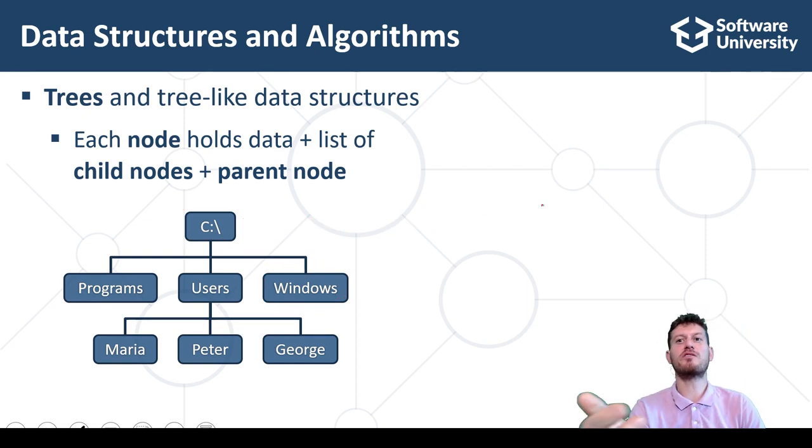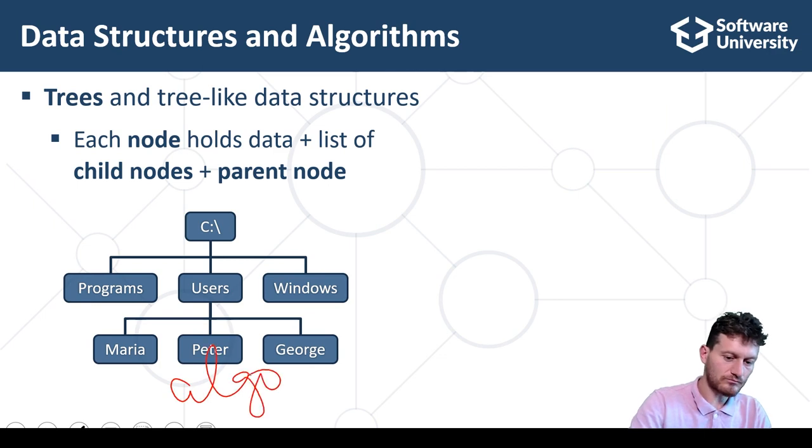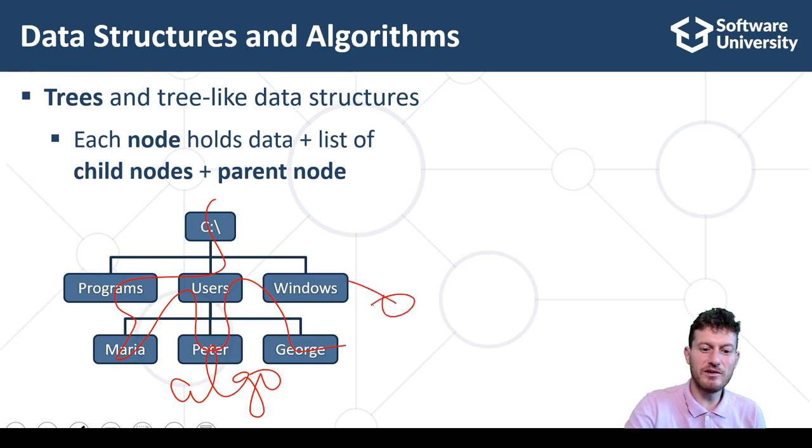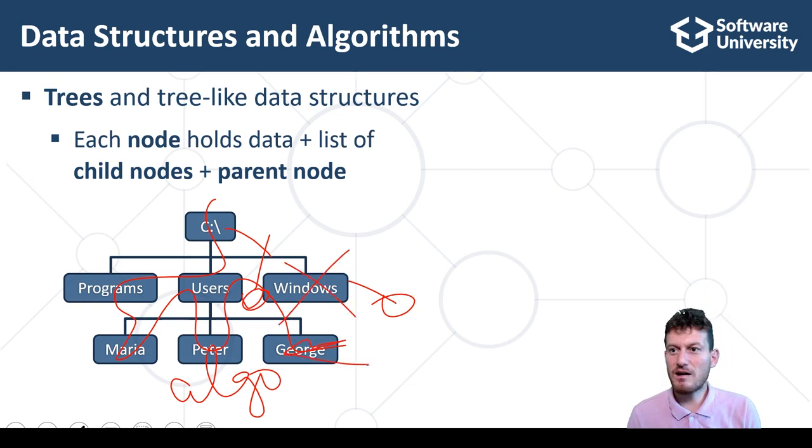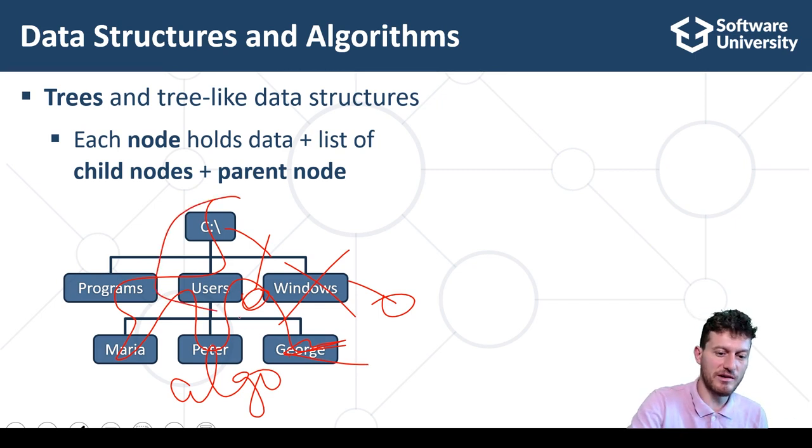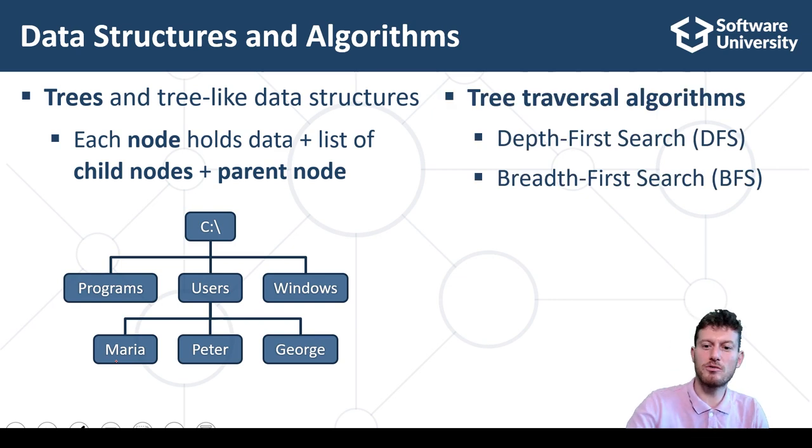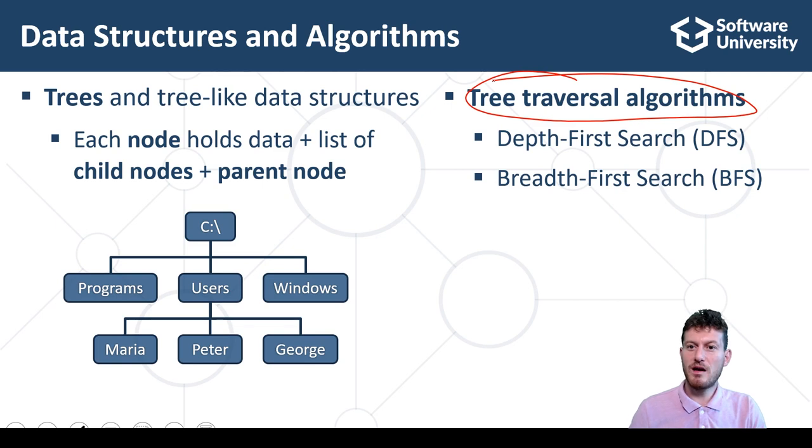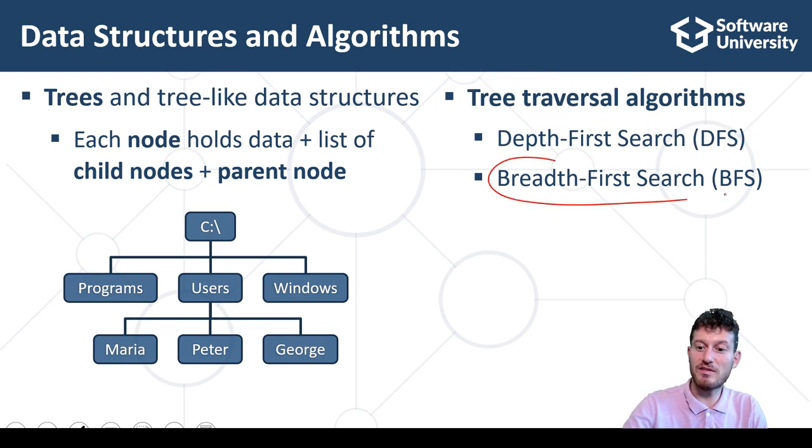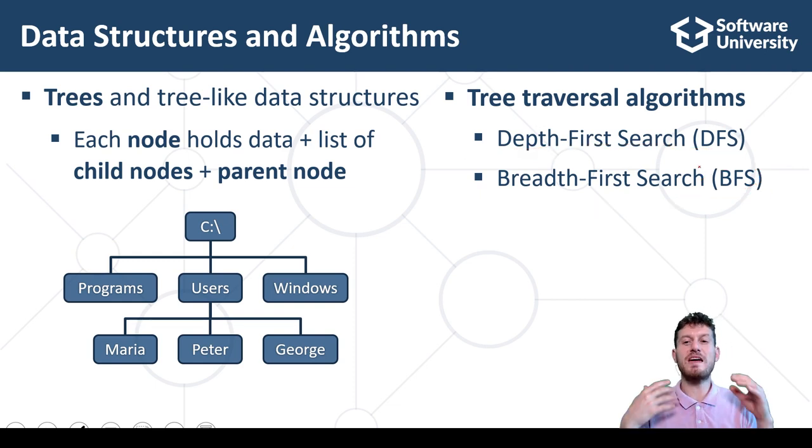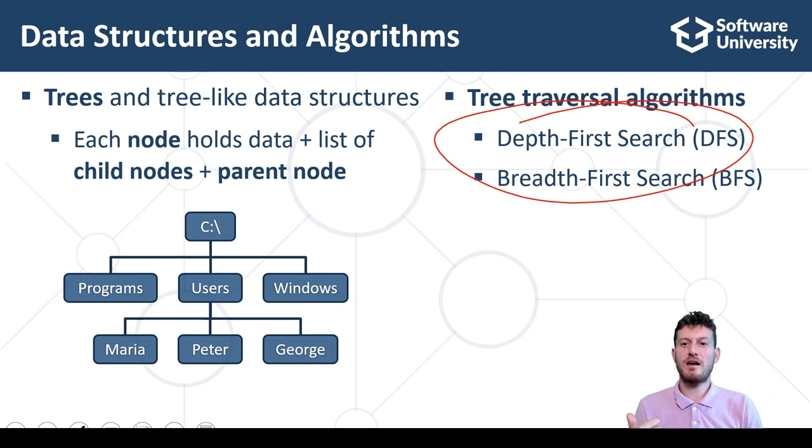Data structures often come with algorithms for their processing. Such algorithms can be different styles of traversing, inserting, deleting or modifying a node, extracting substructures, finding paths, and much more. Examples of algorithms are the classical tree traversal algorithms: Depth-first search (DFS) and breadth-first search (BFS). We shall learn them in the Data Structures and Algorithms module at SoftUni.